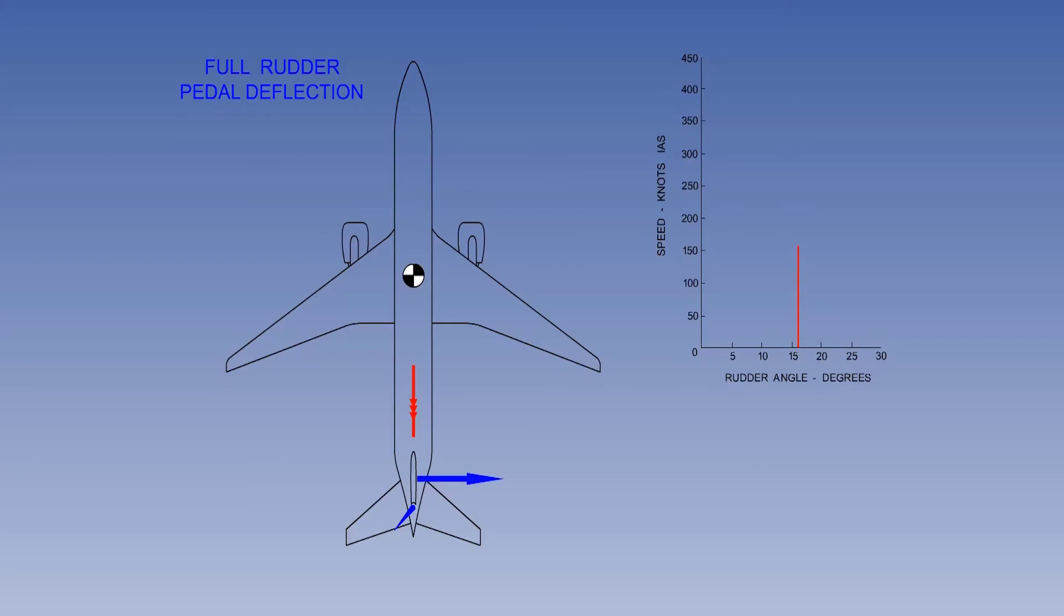You can see that full rudder displacement is available up to about 160 knots indicated airspeed. Above that speed, the rudder ratio changer reduces the maximum available rudder displacement at a rate inversely proportional to IAS to maintain the required rudder authority.